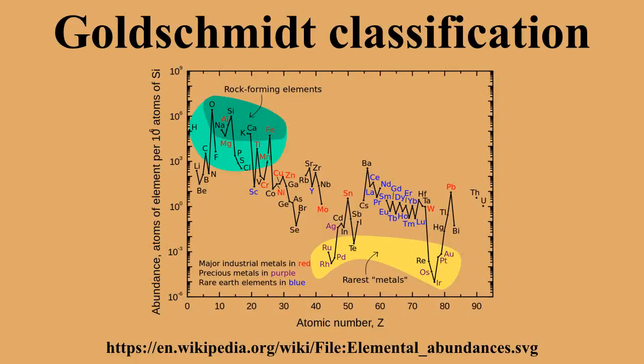The Goldschmidt classification, developed by Victor Goldschmidt, is a geochemical classification which groups the chemical elements within the Earth according to their preferred host phases into lithophile, siderophile, chalcophile, and atmophile volatile. Some elements have affinities to more than one phase. The main affinity is given in the table below, and a discussion of each group follows that table.